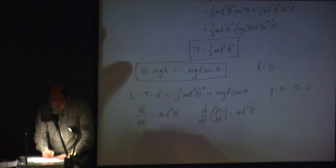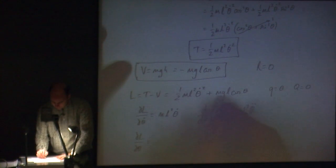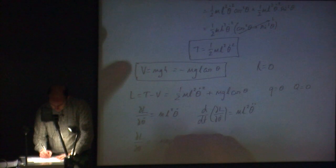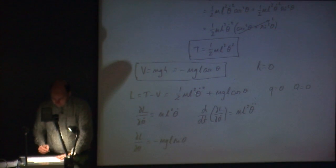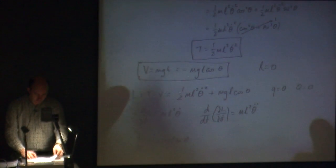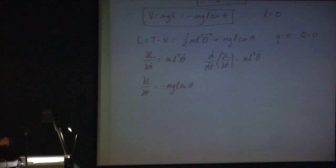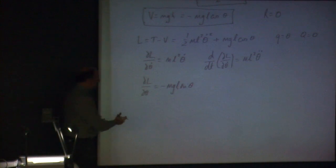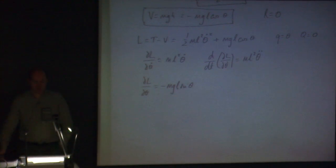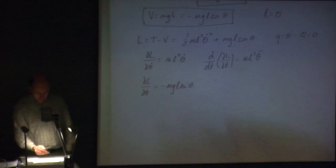Then dL/d theta — the first term is a constant so it disappears, I just take the second term, and that's going to be minus mgl sine theta, because cosine turns into minus sine. Notice I'm taking the derivative with respect to theta, not time, so there are no theta dots. The derivative of cosine of theta is minus sine of theta, and mgl is just a constant, so I get minus mgl sine theta.